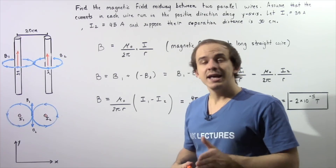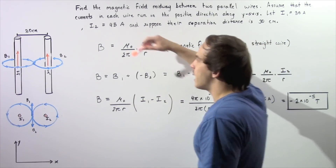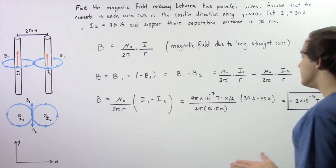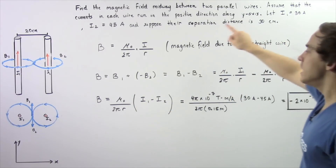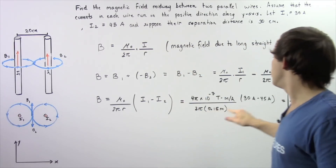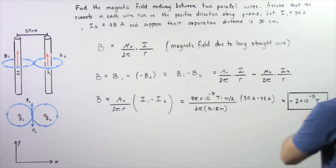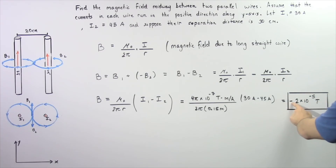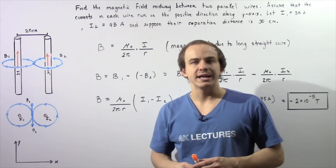Here μ₀, the permeability of free space, equals 4π × 10⁻⁷ T·m/A. The denominator uses 2π multiplied by 0.15 meters (half of 30 cm converted to meters). Substituting I1 = 30 A and I2 = 45 A gives I1 − I2 = −15 A. Multiplying through, the result is −2 × 10⁻⁵ teslas. The magnitude is 2 × 10⁻⁵ T, and the negative sign means the total magnetic field points downward along the y-axis.